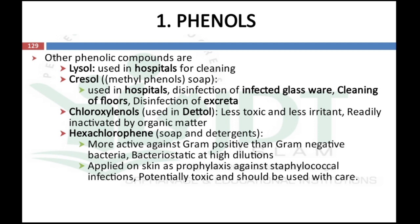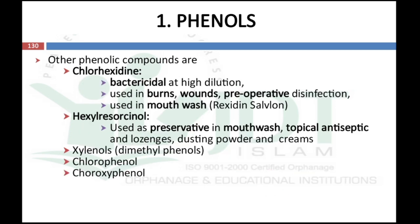Hexachlorophene is used as a soap and detergent. It is more active against gram-positive than gram-negative bacteria and is bacteriostatic at high dilution. It can be applied on skin as prophylaxis against staphylococcal infection but is potentially toxic and should be used with care. Chlorhexidine is another phenolic component which is bactericidal at high dilution and used in burns, wounds, and pre-operative disinfection, and used in mouthwashes such as Rexidine and Savlon. Other phenolic compounds include xylenol, chlorophenol, and chloroxyphenol.